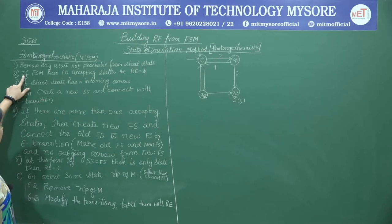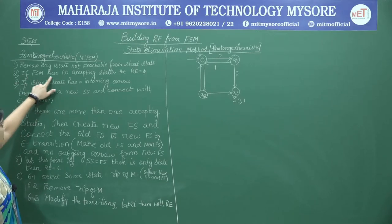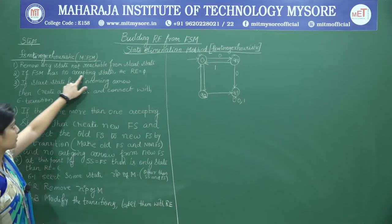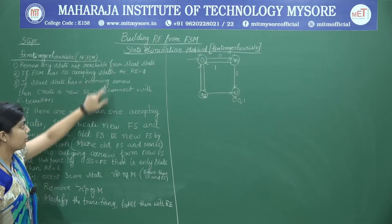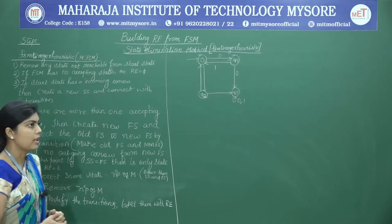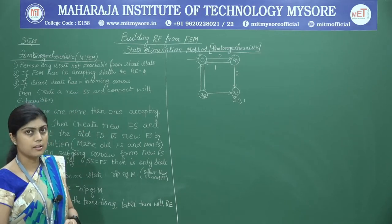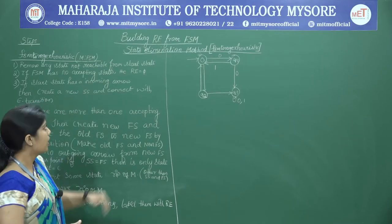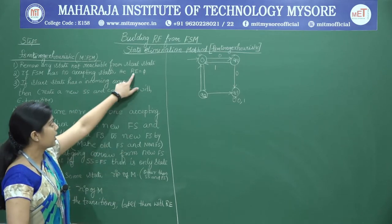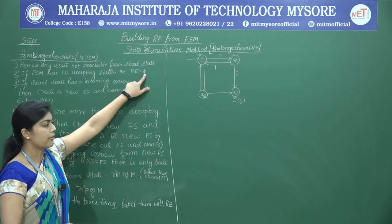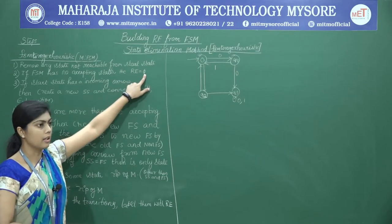The second step is: if the FSM has no accepting states at all, then it cannot accept any strings, and the regular expression is given by null.